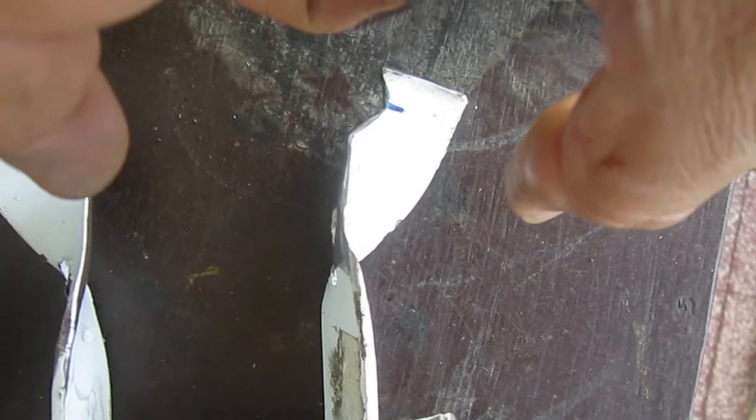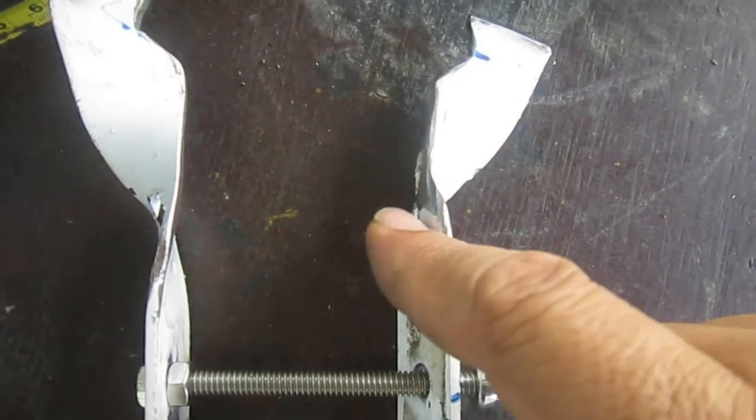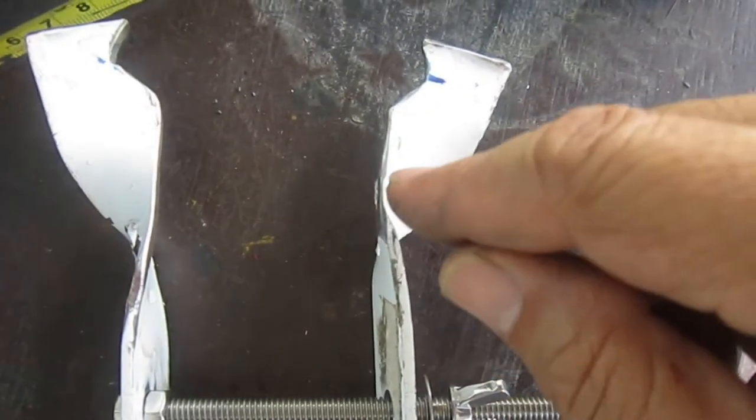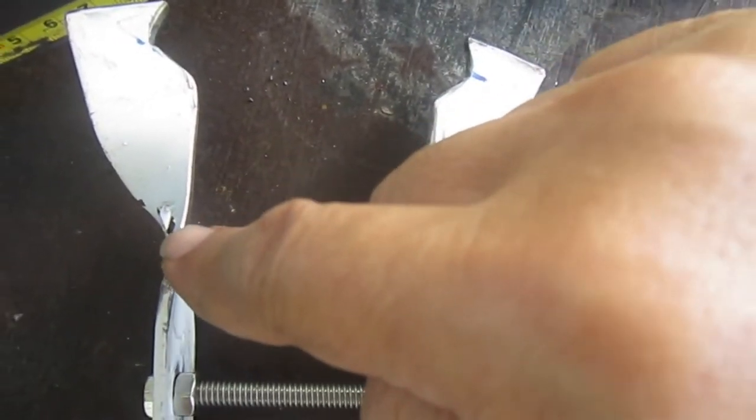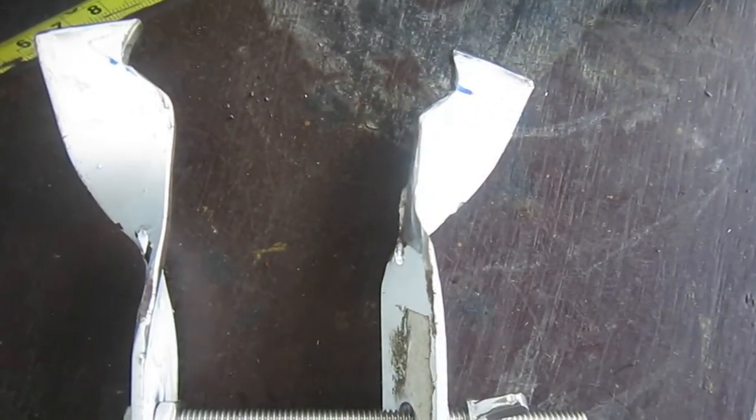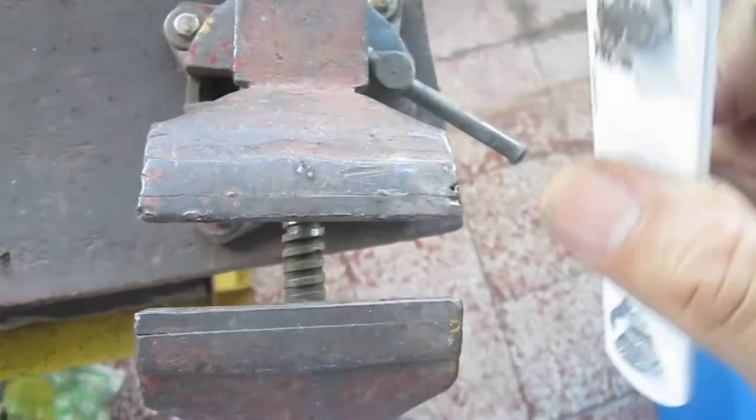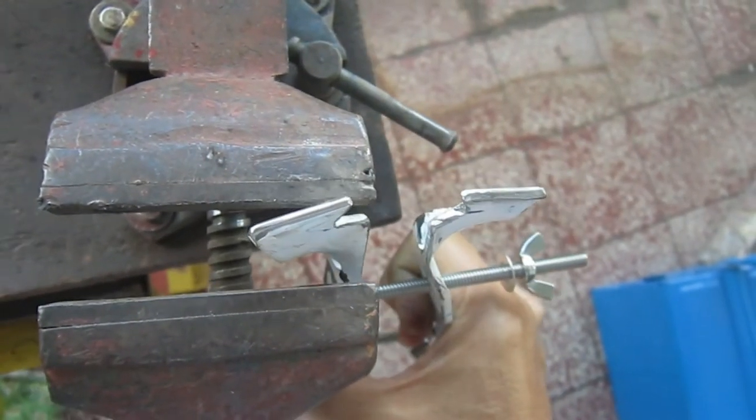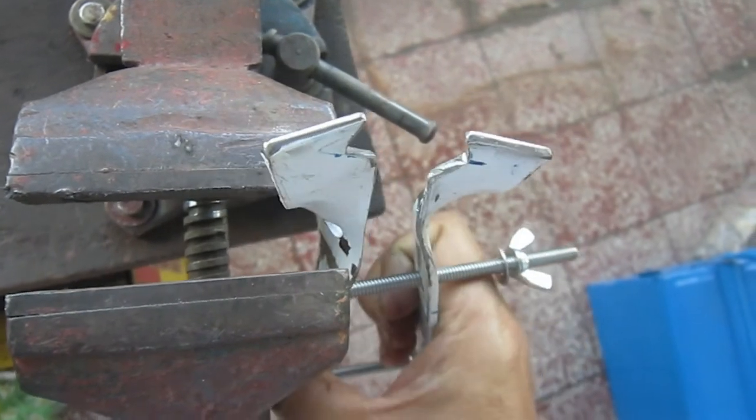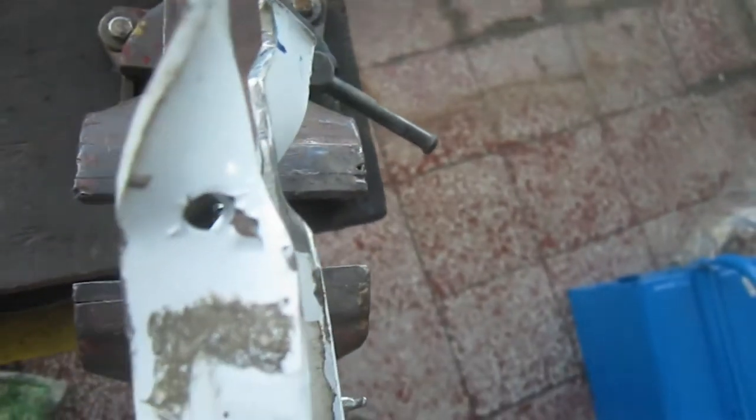So you place this in your vice and then twist it with your pipe wrench so that you can bend it this way. To bend it, just put it in your vice and then bend it with a wrench so that you can have that shape.